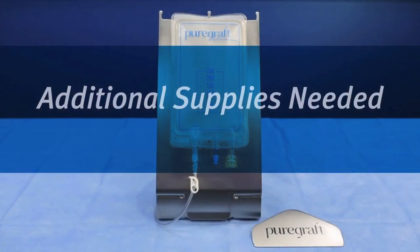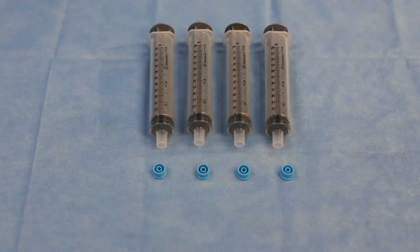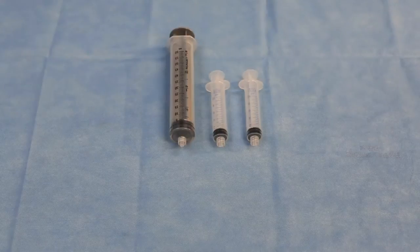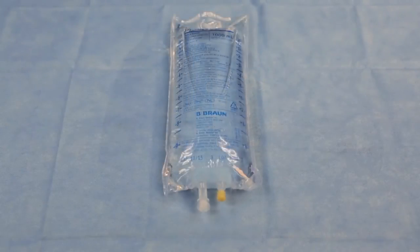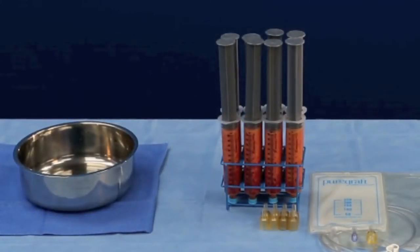A few additional supplies are needed for graft processing. These include 60 milliliter Toomey syringes and caps, luer lock syringes, and lactated Ringer's solution. A syringe stand may be used to hold the filled syringes upright. If a syringe stand is not available, this can be achieved with a bowl or jug.